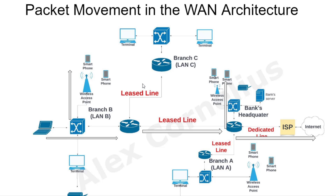Let's now take a look at packet movement in a Wide Area Network. For instance, if I am making use of this laptop and I'm connected to this internet service provider, I'm running an application on this laptop and will be generating a packet. This packet will first be forwarded to this router. Whenever you are sending a request, it must be to a destination IP address. If the destination IP address is existing within this local area network, then the traffic doesn't need to traverse the WAN — it will go back and locate the particular device that the request is being made to.